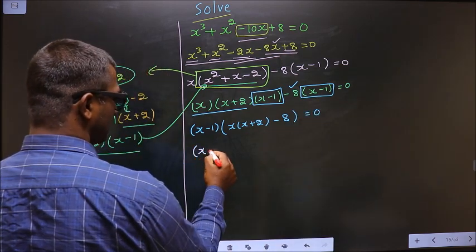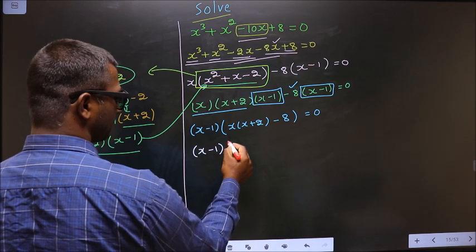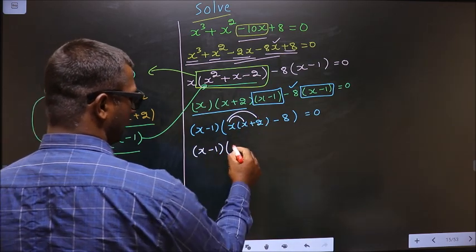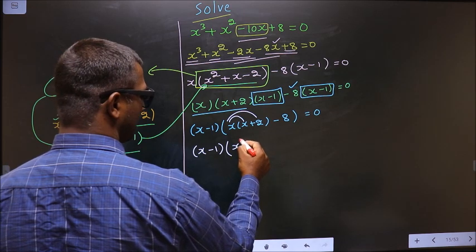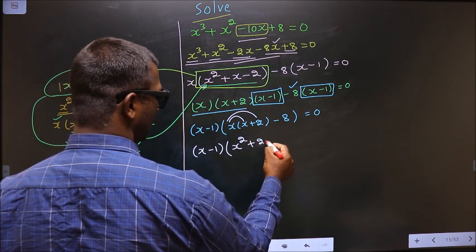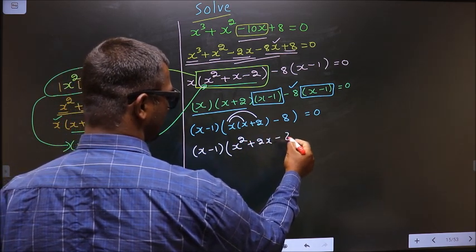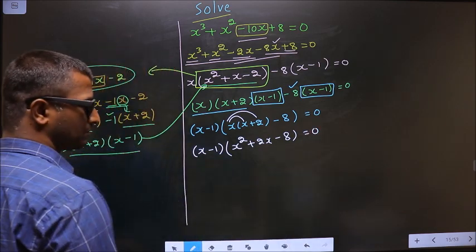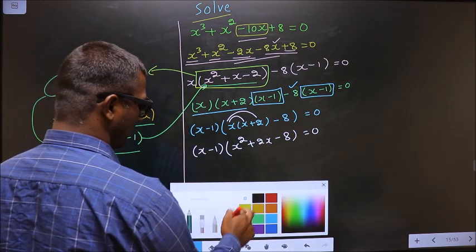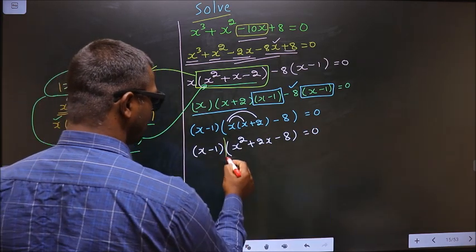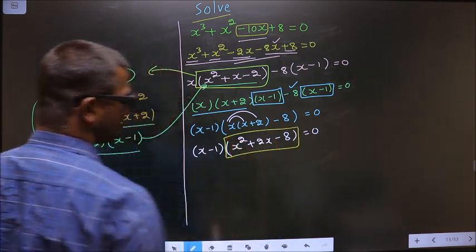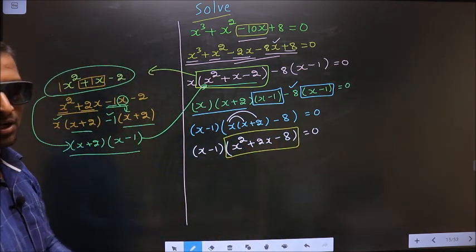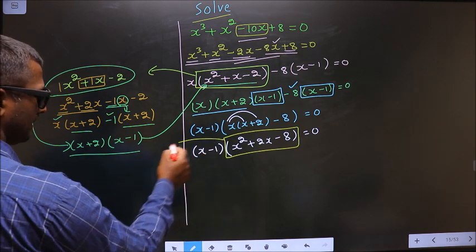Now x minus 1 — here you open up the bracket in this way. You get x square plus 2x minus 2x minus 8 equal to 0. Now this is a quadratic equation, so I will factorize this quadratic equation.